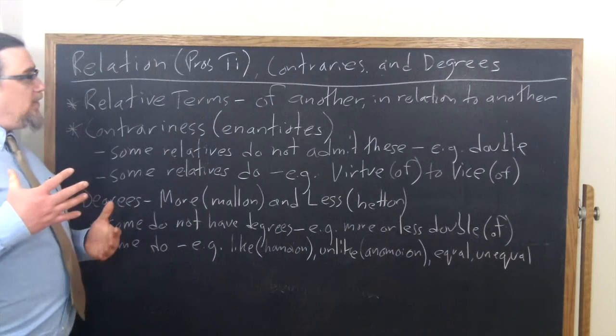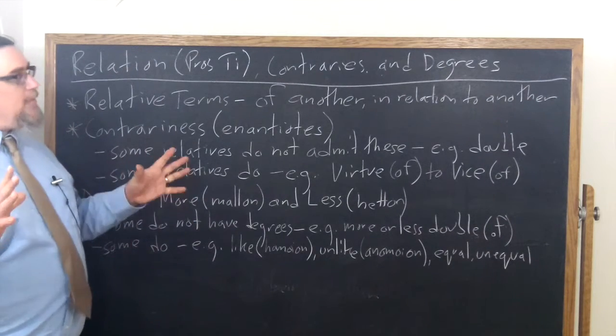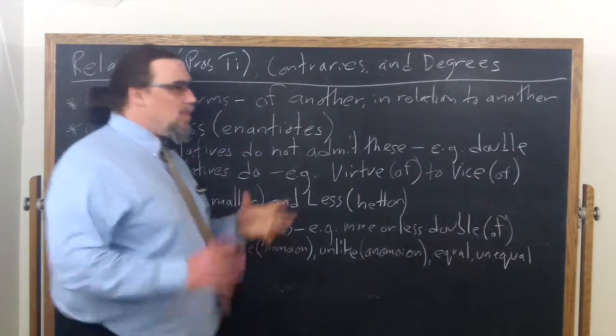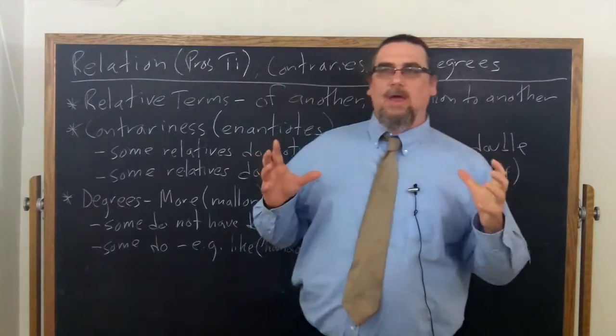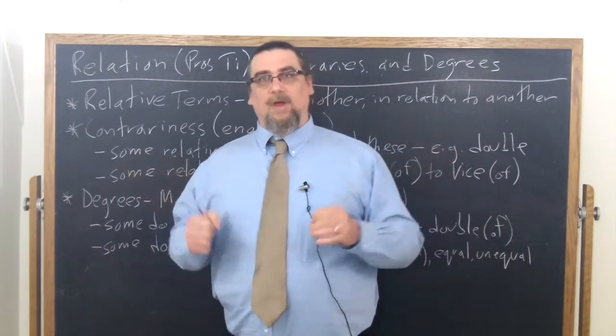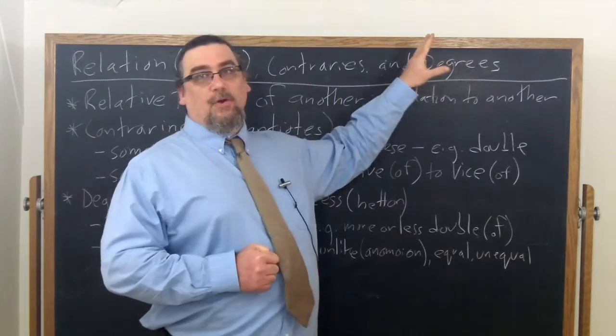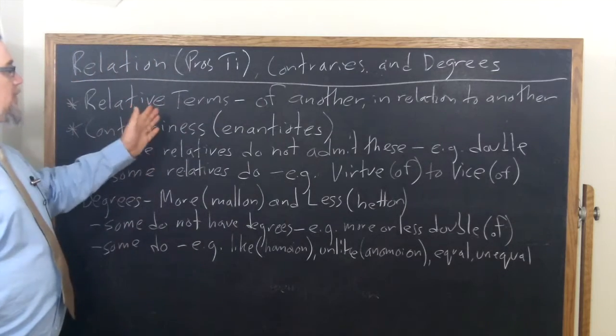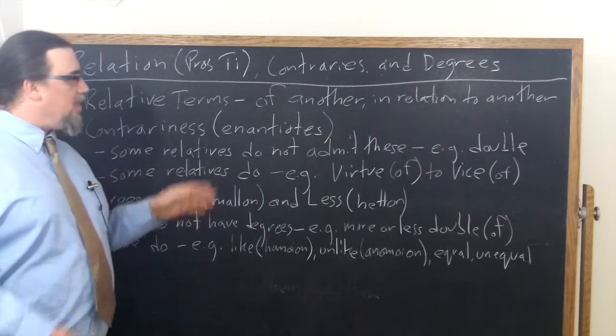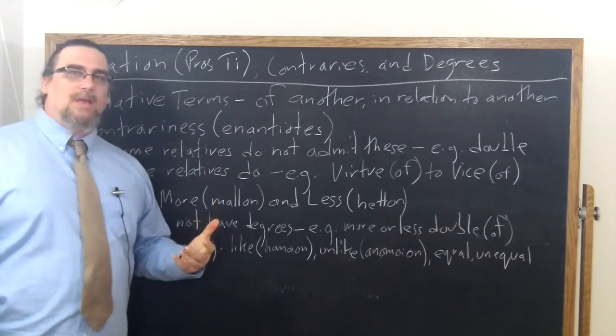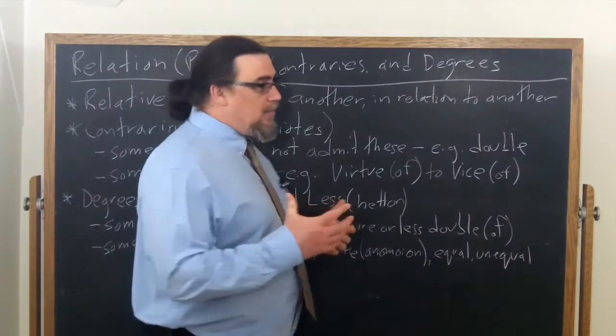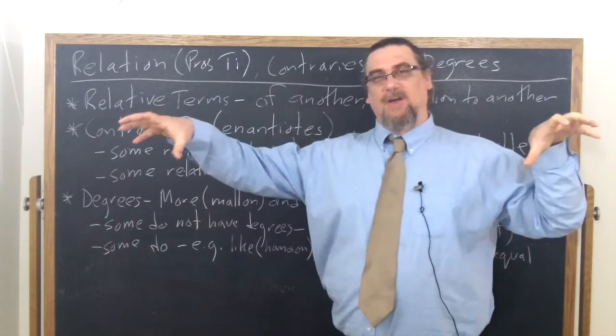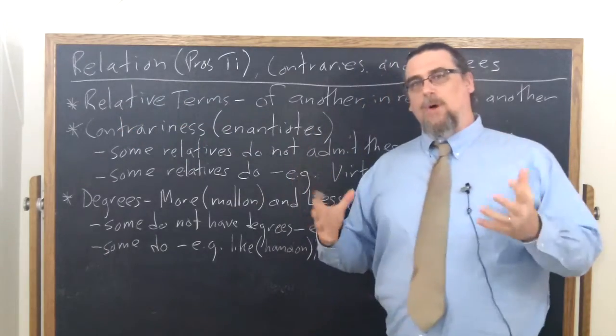Now, there's two things that Aristotle talks about as sometimes belonging to relative terms and sometimes not. And those are contraries where terms are actually contrary to each other, or if you like, opposites is another way of putting it, or whether the terms admit of degrees. So let's look first at contrariness or contraries. The Greek word here is enantiotes. That's a substantive for enantia. One thing is an enantion and the other thing's another enantion, plural enantia. These are opposed to each other.